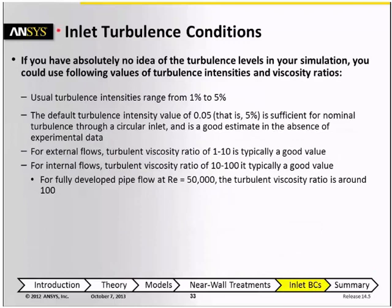Sometimes you can run into a case where it's challenging to choose the inlet values for the turbulence. In that case, if you have absolutely no idea, there are a few guidelines you can use. Normally in turbulent flows, turbulent intensities range from about 1% to about 5%. Anything larger than about 5% is highly turbulent. The default turbulent intensity value of 5% is probably sufficient for nominal turbulence through a circular inlet, and it's a good estimate if experimental data is not available.